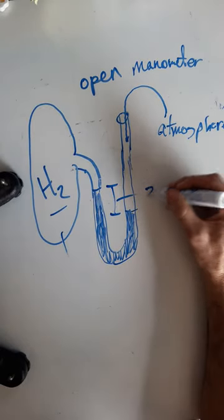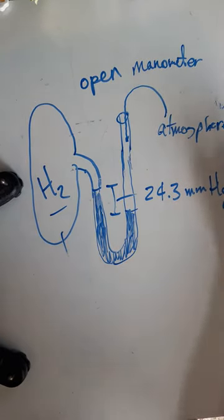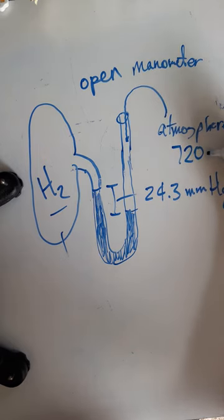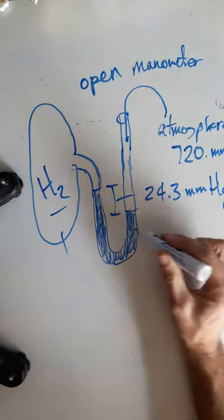Say it is 24.3 millimeters of mercury difference. Atmospheric pressure was 720 millimeters of mercury on this side. And so because the atmospheric push,